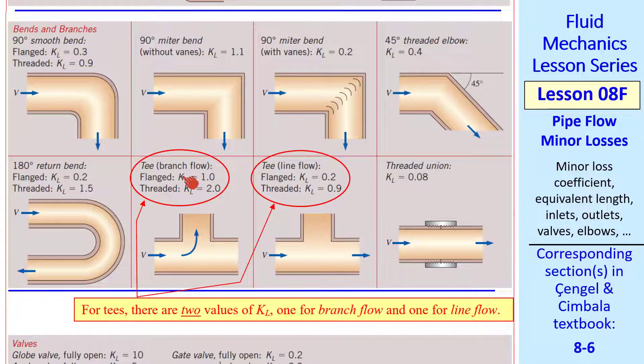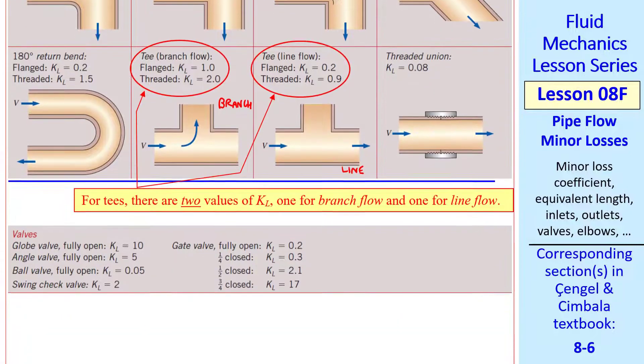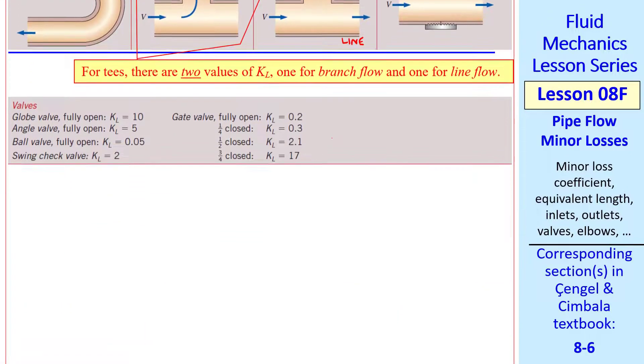Note that for Ts, there are two values of KL. One for the branch flow and one for the line flow, where the part coming off is the branch, and the part continuing straight on is the line. There are also KLs listed for various kinds of valves.